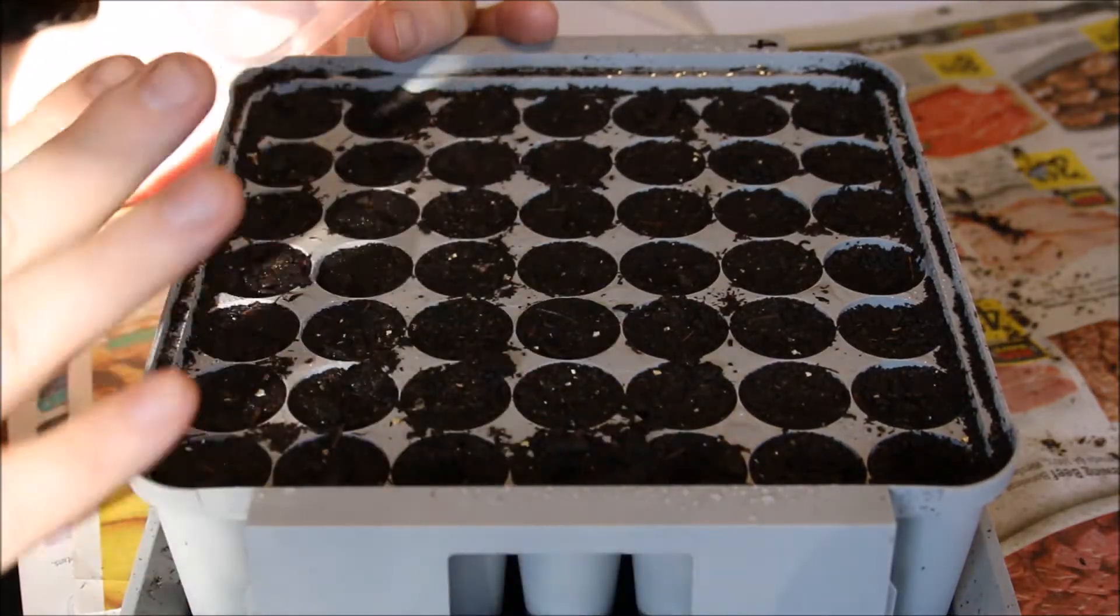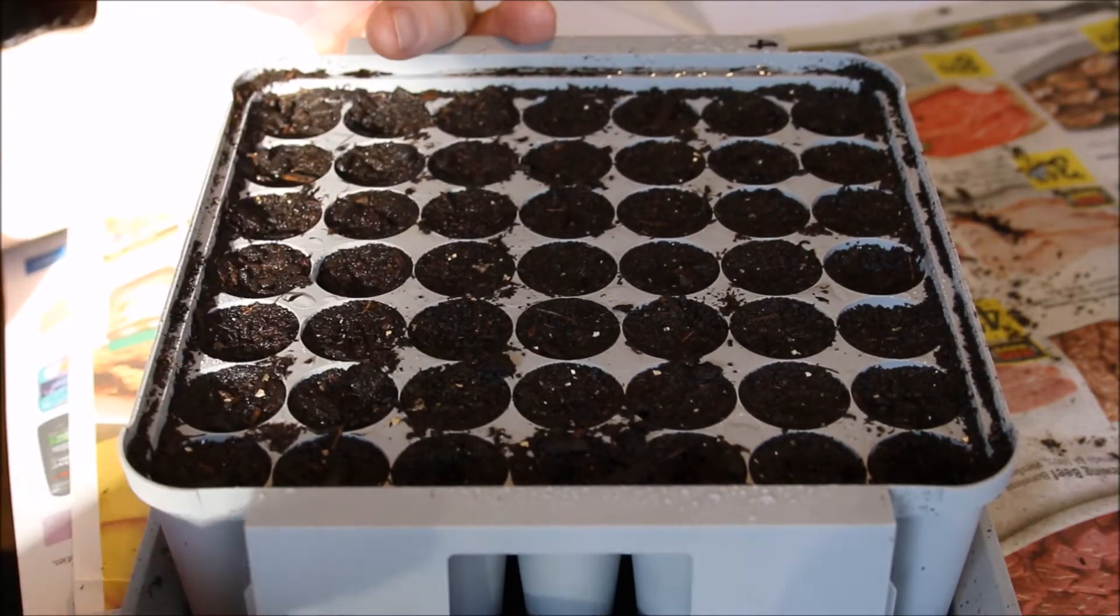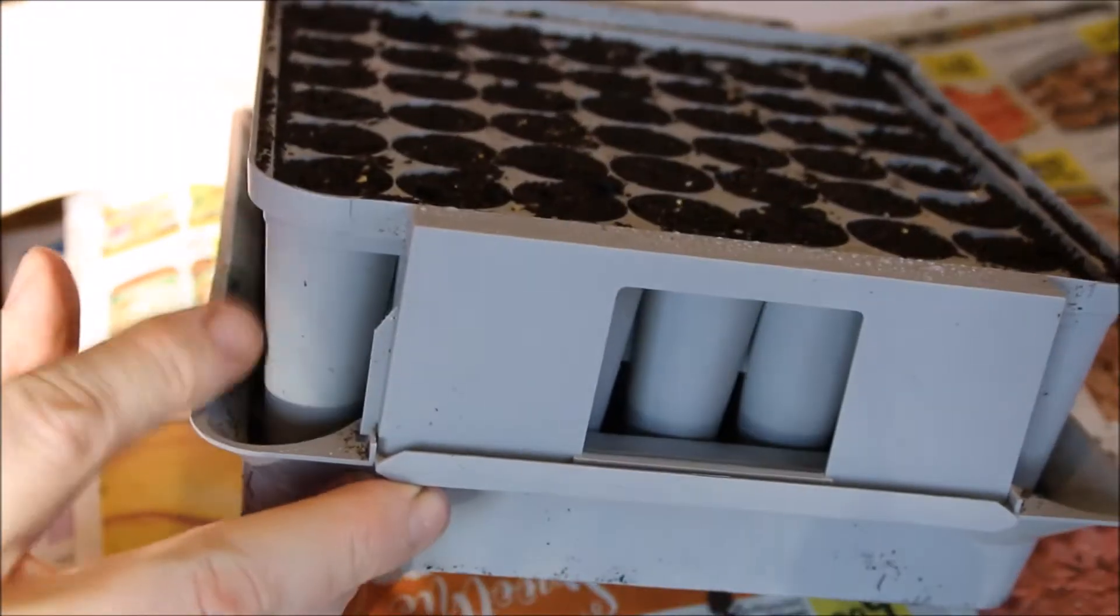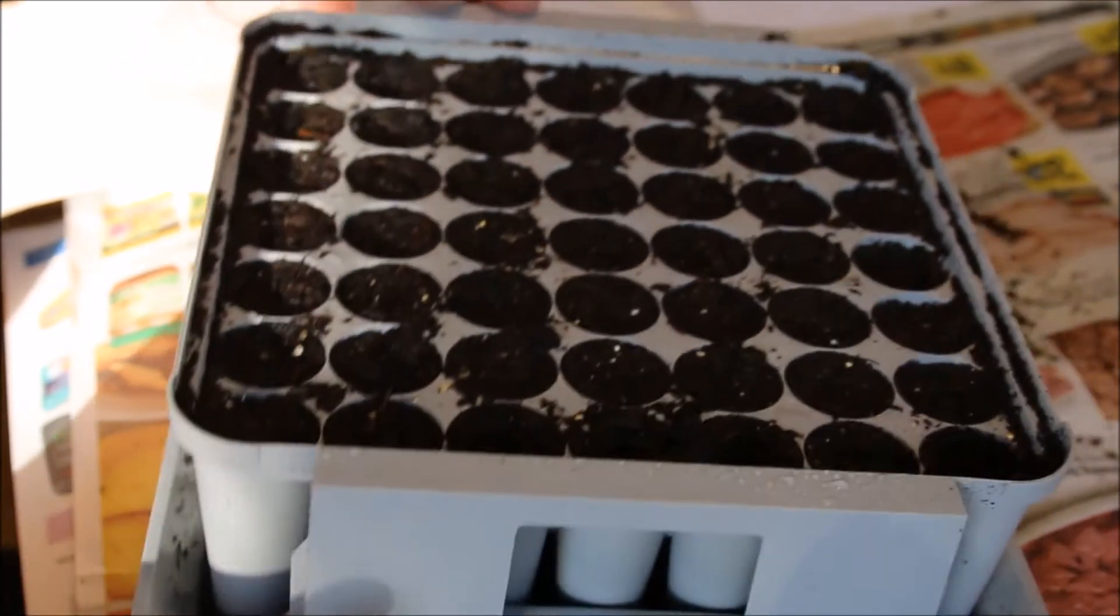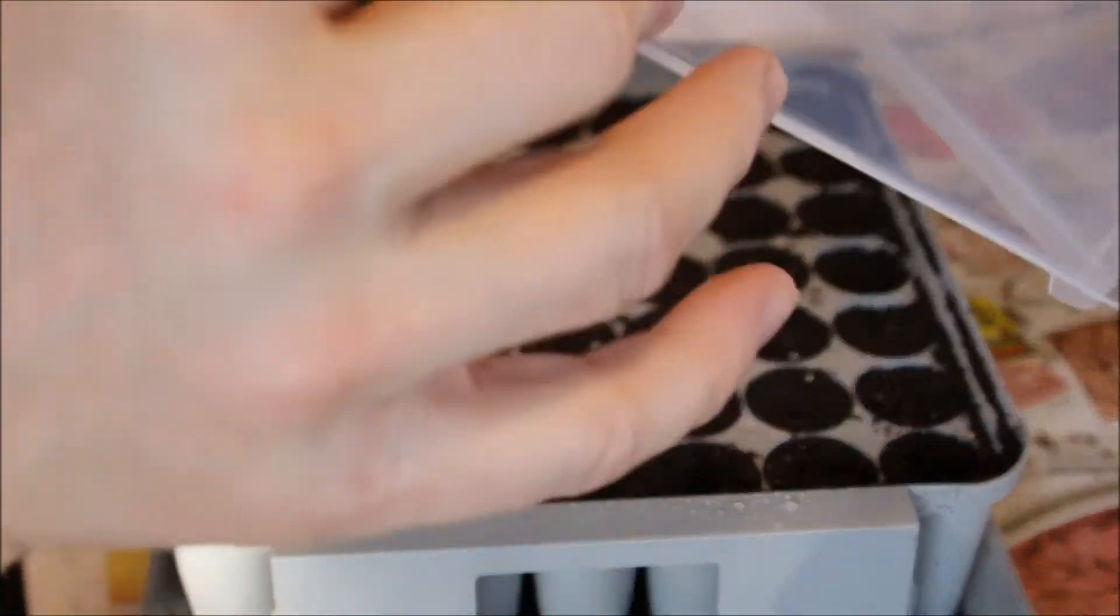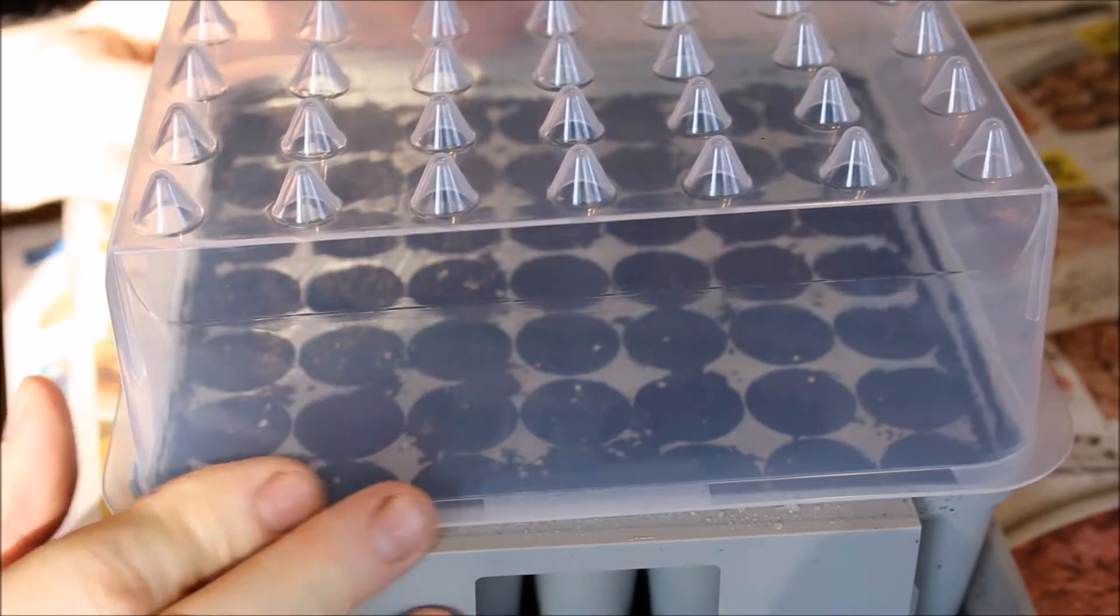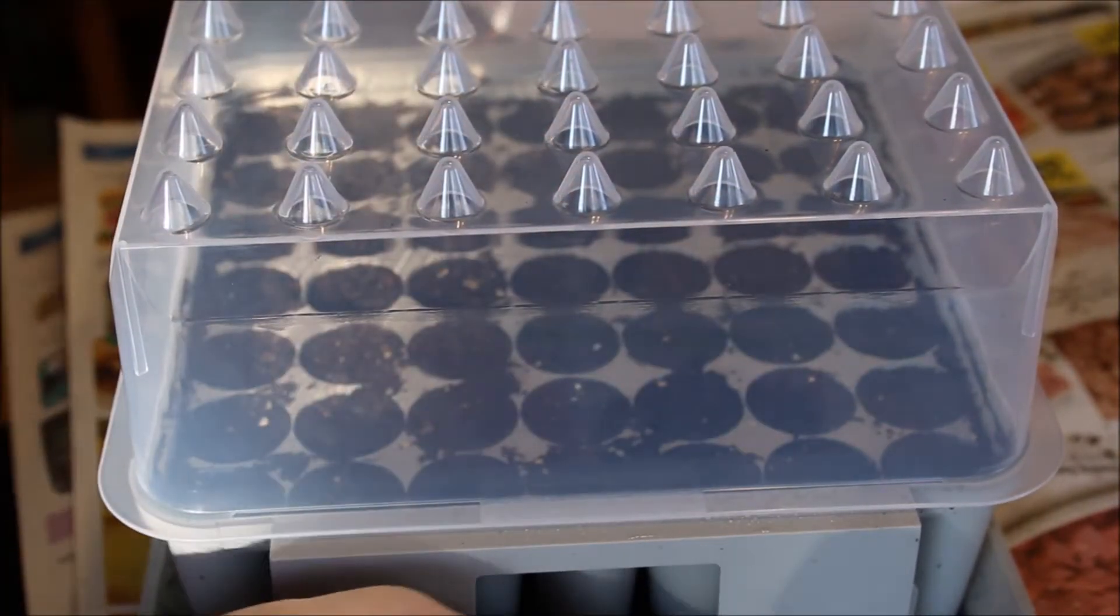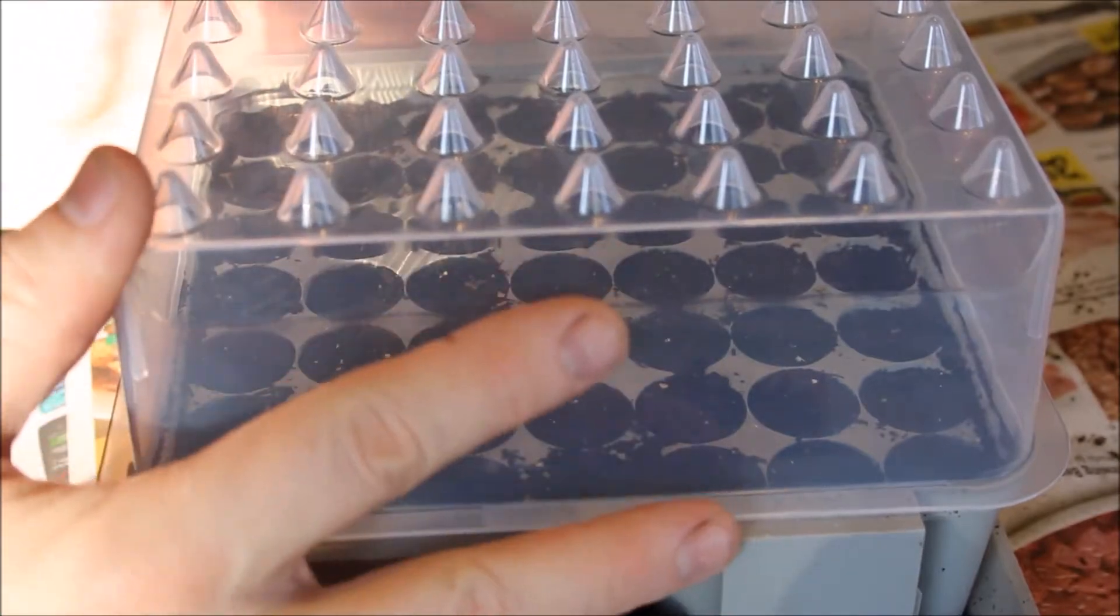So as with any standard propagator that you're going to be using, this does have holes on the bottom which will allow me to add water to the bottom. It also has a top that just goes on top to keep everything nice and moist in this early stage.